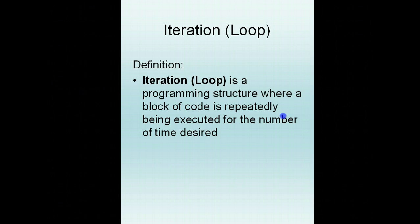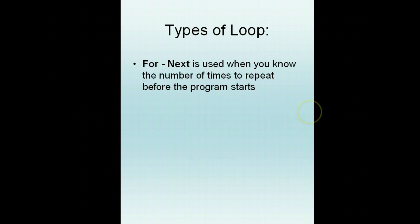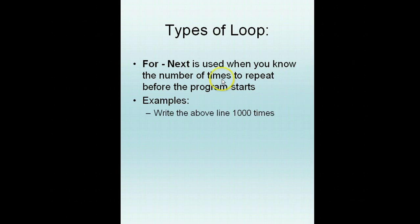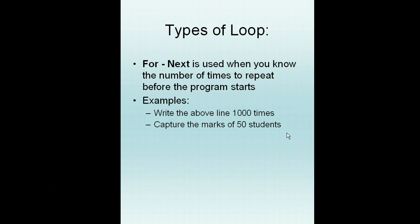How do you do a loop in Excel VBA? You can do it using a for-next loop. For example, you want to write a sentence statement on the above line 1000 times, or you want to capture the marks of 50 students, where you want to iterate through code to capture the mark of a student 50 times — or rather, 50 students.